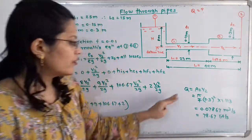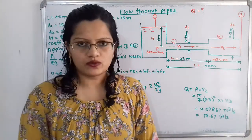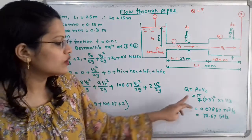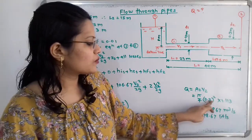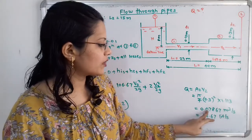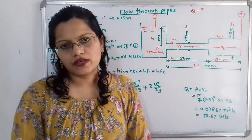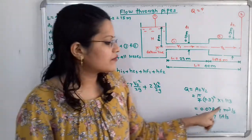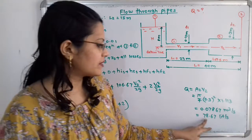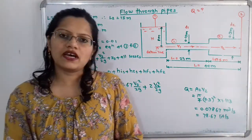Now we find the discharge Q. Using Q = A2 × V2 = (π/4) × (0.3)² × 1.113 = 0.07867 cubic meters per second. Converting to liters per second by multiplying by 10³ gives 78.67 liters per second. This is the final answer.